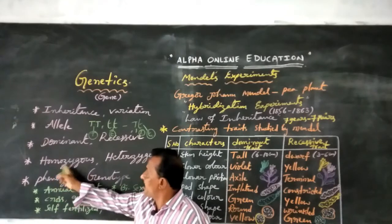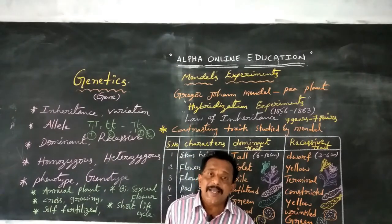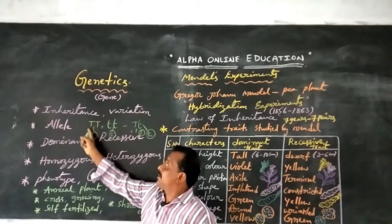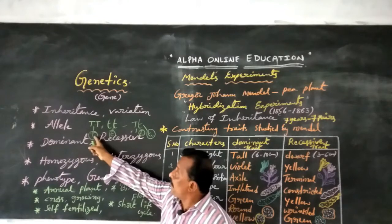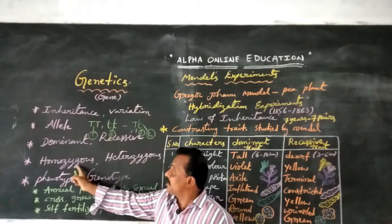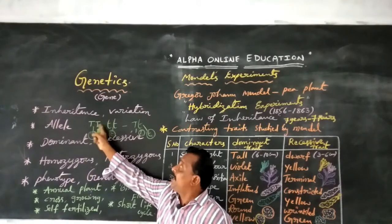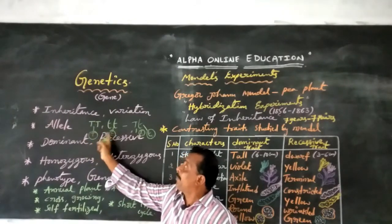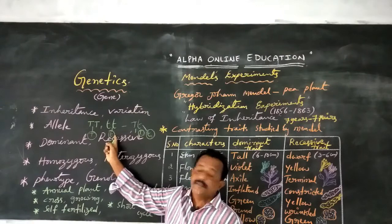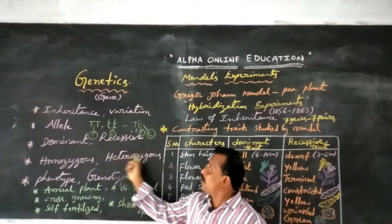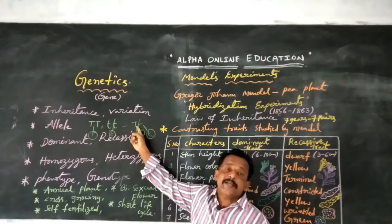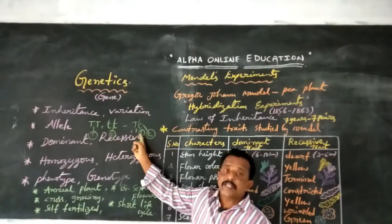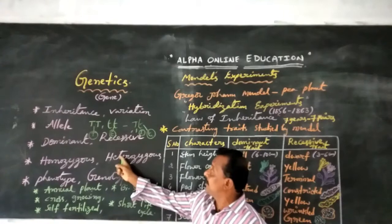Coming to homozygous and heterozygous. An individual having two similar alleles or genes that produce only one kind of gamete — that is called homozygous. An individual having two types of alleles or genes, such as capital T gametes or small t gametes, producing two kinds of gametes — that is called heterozygous.